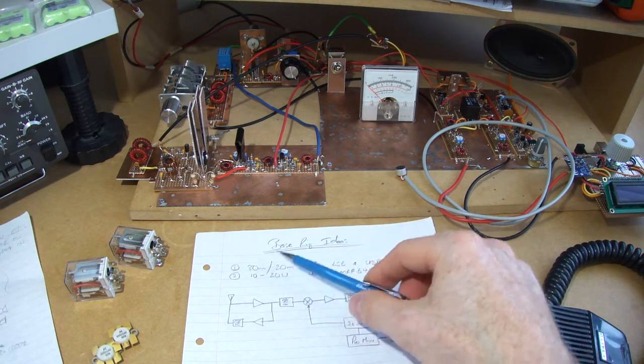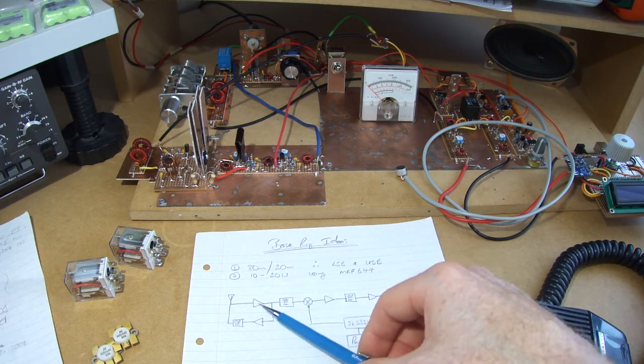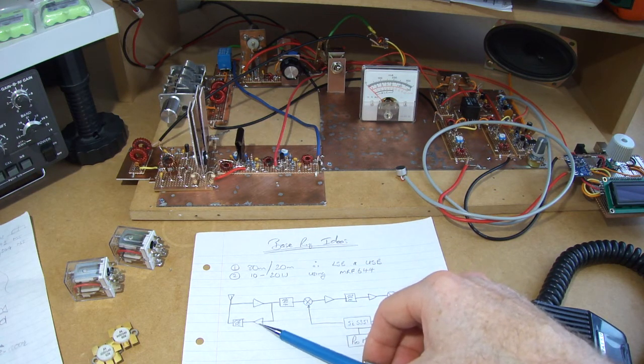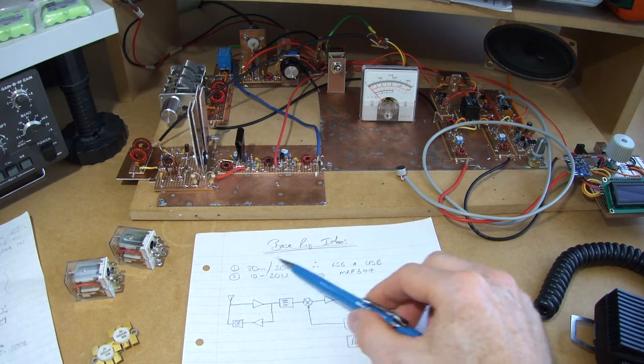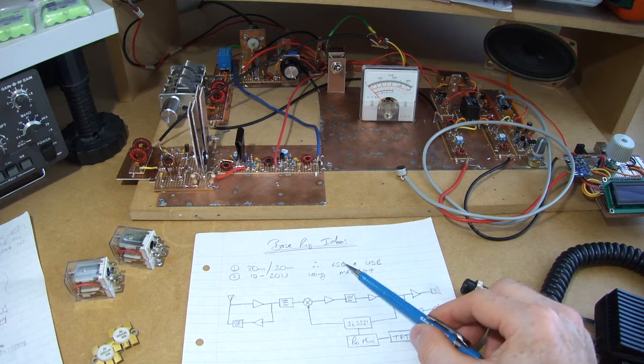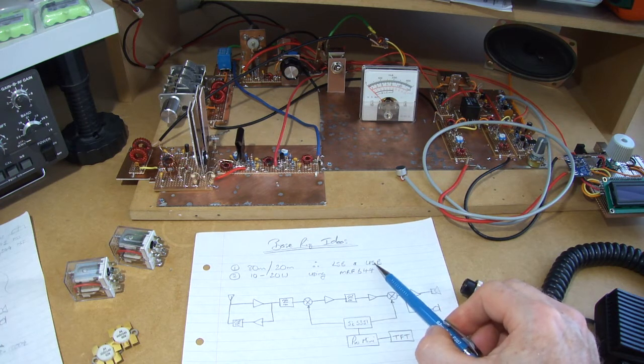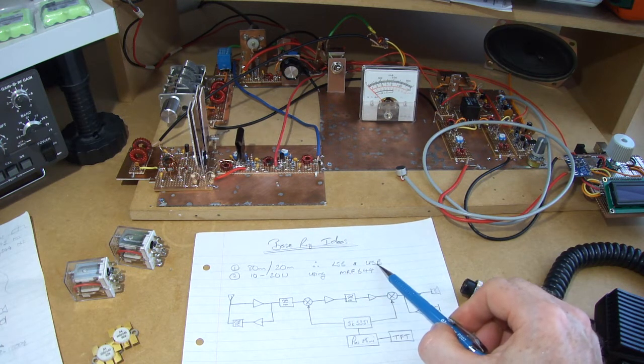It'll be two bands which will be interesting because we'll have to start looking at, especially on the power amplifier, some gain compensation because that's quite a variance in gain there. Therefore the radio will have to be lower sideband and upper sideband, so lower for 80 meters and upper sideband for 20.